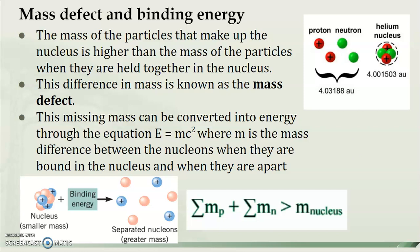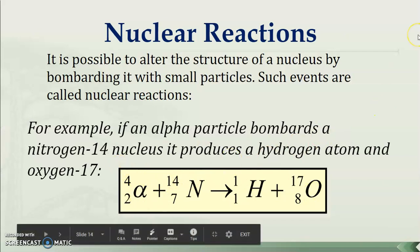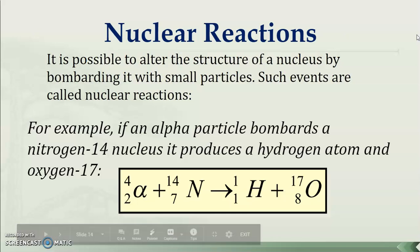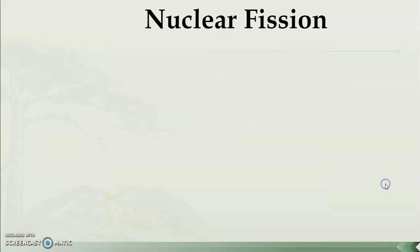The energy that holds the nucleus together corresponds to that missing mass — known as the mass defect. That missing mass is converted to energy in a nuclear reaction. Nuclear reactions look similar to balancing chemical equations. For example, bombarding nitrogen with alpha particles: the alpha particle is essentially a helium nucleus. The total nucleon number is conserved — 14 + 4 = 18 on the left, and 1 + 17 = 18 on the right. Charge (atomic number) is also conserved: 2 + 7 = 9, and 1 + 8 = 9.